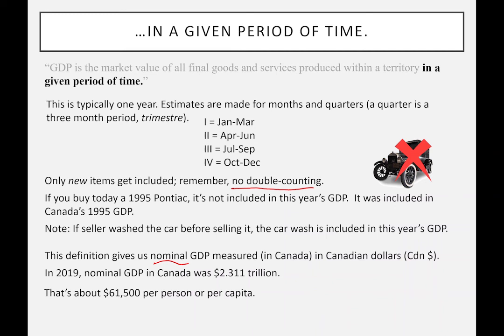To make 2.3 trillion more understandable: divide by Canada's population of about 35 to 36 million and you get roughly 60 to 61 thousand dollars per person, or per capita. That's a bit more understandable. For a household or family of three people — say two roommates — that's roughly 180,000 dollars. What this means is that Canada produces about 180,000 dollars' worth for a typical family of three on average — including things sold to foreigners, things the government purchases on our behalf, and things we purchase ourselves. Of course it's an average, so some people produce more and some less.